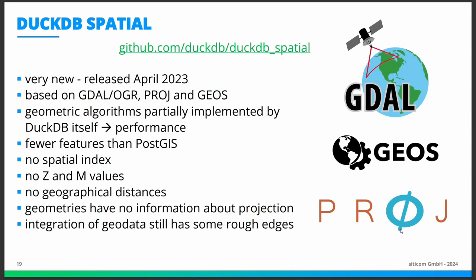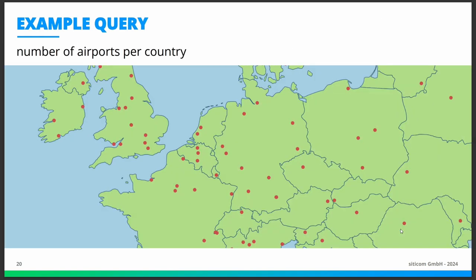About DuckDB Spatial — it's relatively new, a bit more than a year old. It's based on GDAL/OGR, PROJ, and GEOS for a lot of functionality, but some geometric algorithms are implemented by DuckDB itself for speed. It has much fewer features than PostGIS. There's no spatial index yet, though it may come in the future. There are no Z and M values, you cannot compute geographic distances, and when you have a table of geometries there's no stored information about the projection. It sometimes has some rough edges and unclear error messages, but it's getting good support.